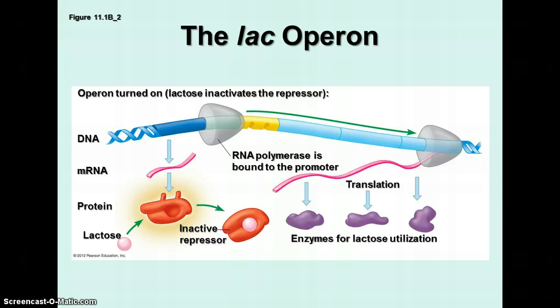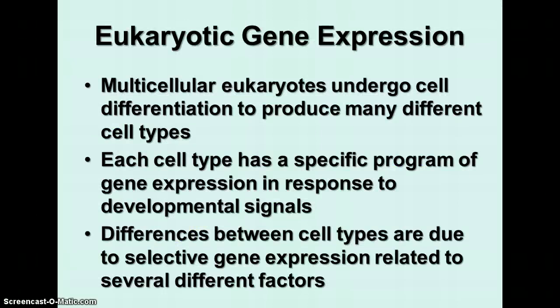It's a little bit different in eukaryotes. Multicellular eukaryotes, like us, undergo cell differentiation to produce lots of different cell types. Remember, you started off as one fertilized egg — a zygote — and now you're made of trillions of cells of several different kinds. Each cell type has a specific program for expressing the genes that are needed for that particular kind of cell in response to various developmental signals, which can be various hormones, chemicals, or lots of different kinds of things.